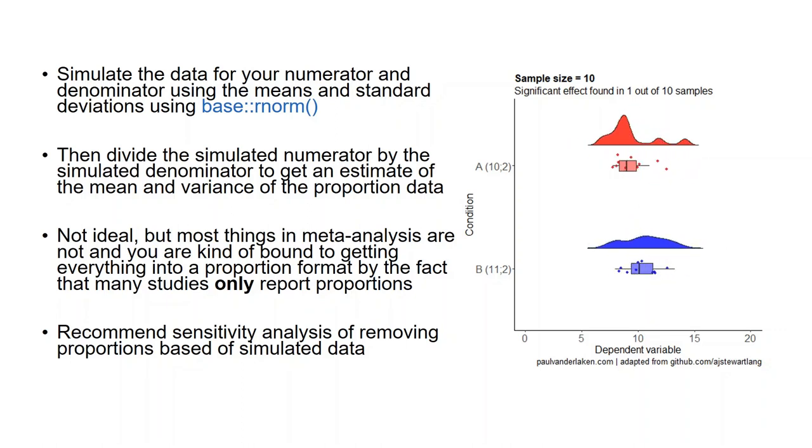Of course, this is not ideal, but then most things in meta-analysis are not, and you're kind of bound to getting everything into this proportion format by the fact that many studies only report things in proportions, as I mentioned earlier. With this kind of thing, I'd recommend a sensitivity analysis based on removing the simulated data just to check that it's not having a disproportionate influence on your overall results.